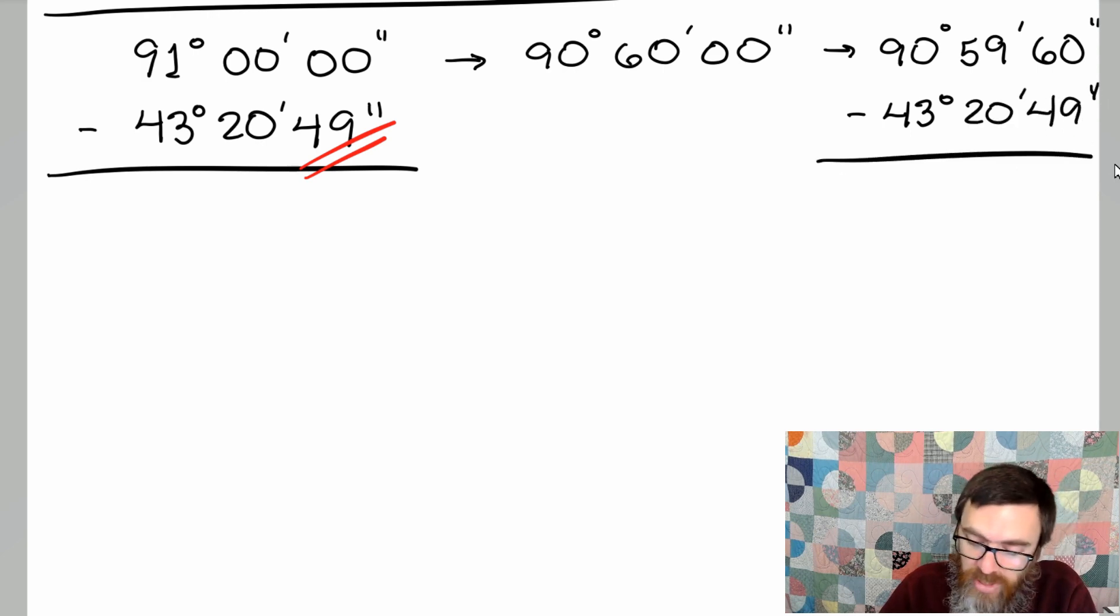We should be able to do this without a problem. 60 minus 49 gives me 11 seconds. 59 minus 20 is 39, so 39 minutes. 90 minus 43 is 47 degrees.